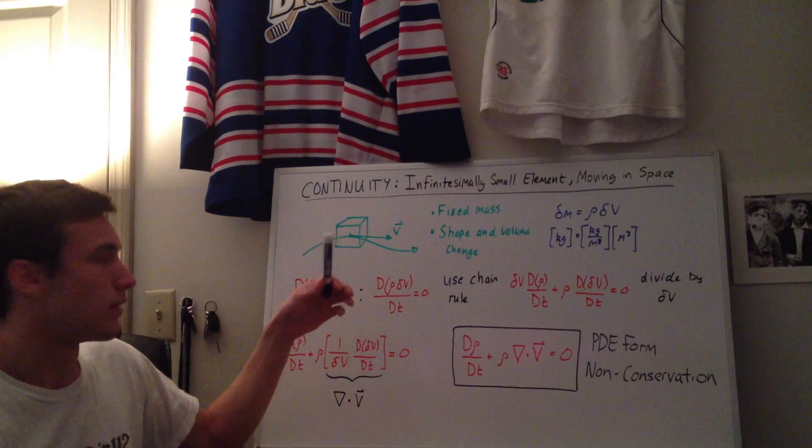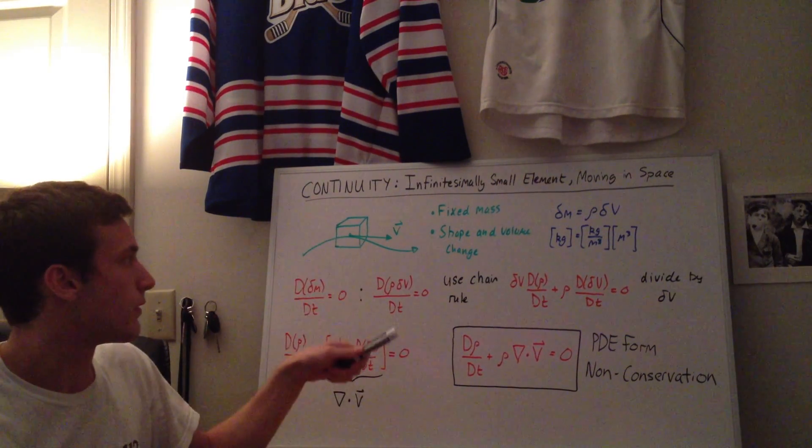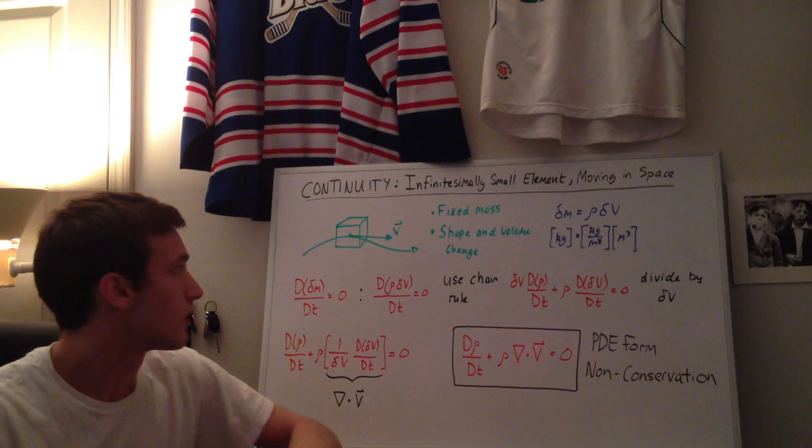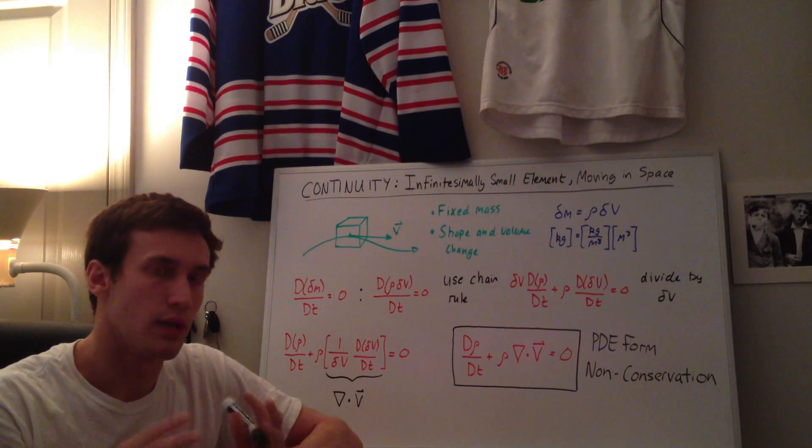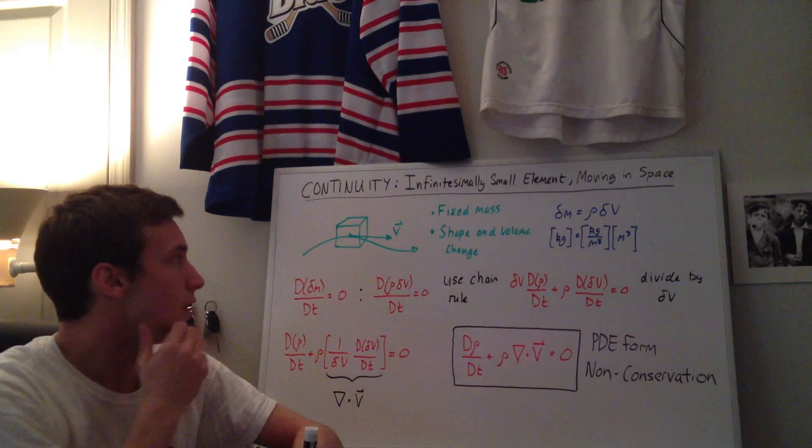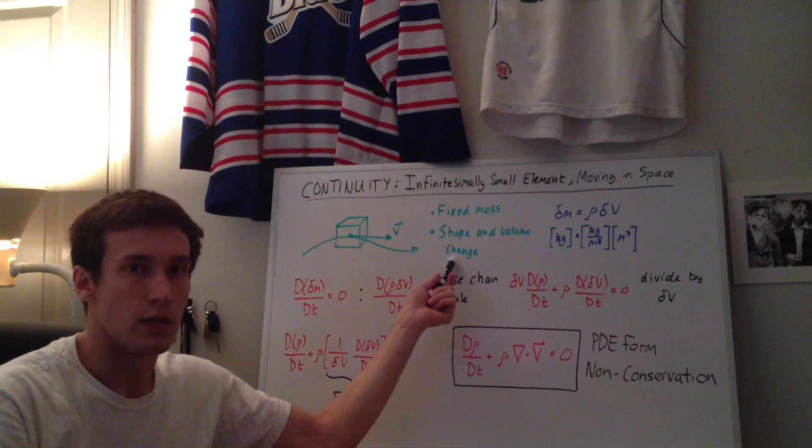So it's a small fluid element and it has a fixed mass. So because it has a fixed mass, and we're assuming there's lots of particles inside this fluid element here, the shape and the volume are going to change.